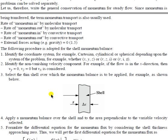The following procedure is adopted for the shell momentum balance. First, identify the coordinate system — for example, whether it is Cartesian, cylindrical, or spherical. Depending on the problem: for Cartesian it is x, y, z; for cylindrical it is r, z, theta; and for spherical it is r, theta, phi.